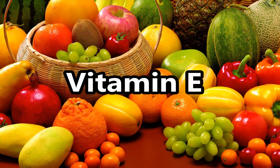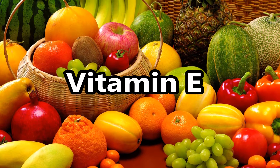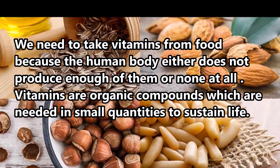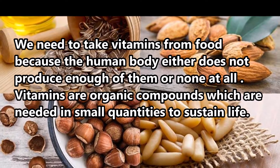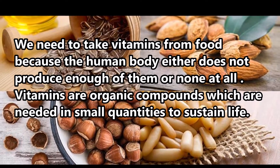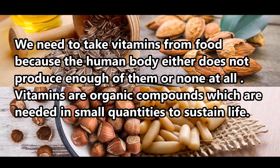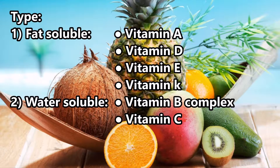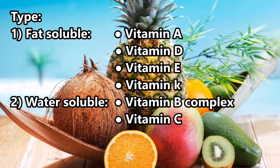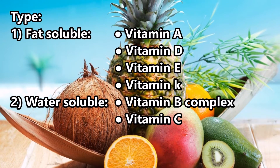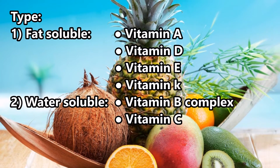This video contains all information about Vitamin E. We need to take vitamins from food because the human body either does not produce enough of them, or none at all. Vitamins are organic compounds which are needed in small quantities to sustain life. Type 1: fat soluble — Vitamin A, Vitamin D, Vitamin E, Vitamin K. Type 2: water soluble — Vitamin B complex and Vitamin C.